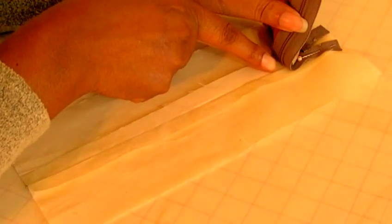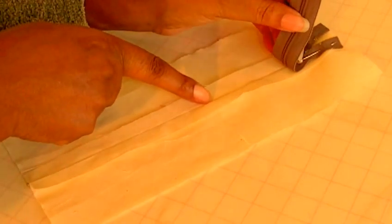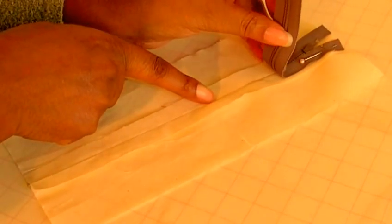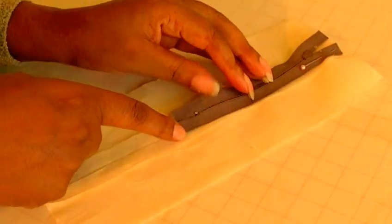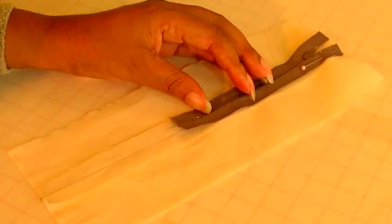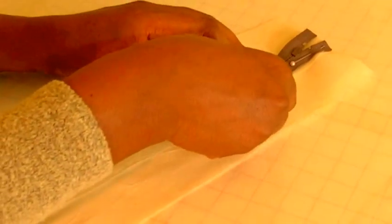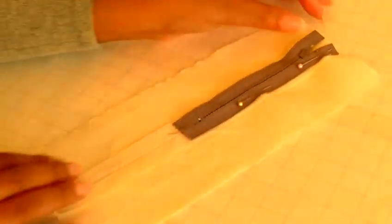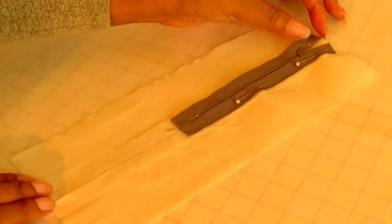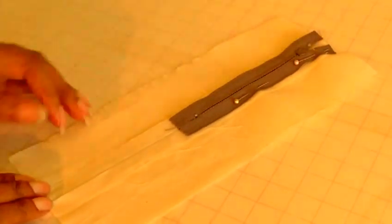So you get your zip and just roll it down to the end, and then secure it with pins like so. Then it will be ready to be base stitched or tacked, whatever you call it.